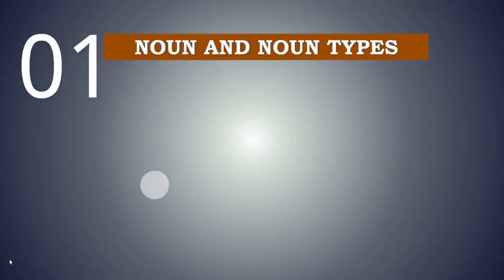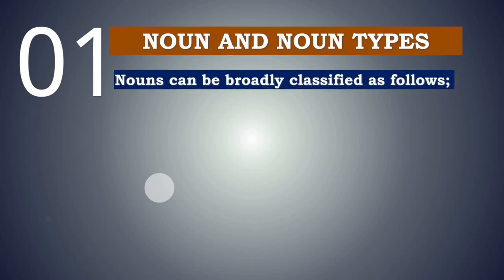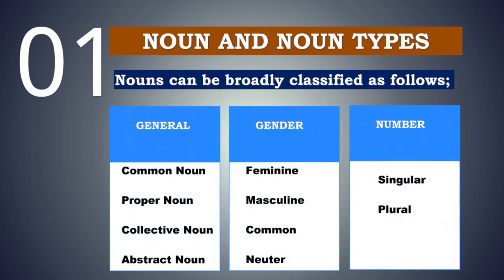First we shall go on to see what are nouns and noun types. We all know that noun is the name of a person, place, animal or thing. This is common knowledge. But nouns can be classified as follows. General classification would be common noun, proper noun, collective noun and abstract noun. Classification on the basis of gender would be feminine, masculine, common and neuter gender. On the basis of number, it would be singular and plural.